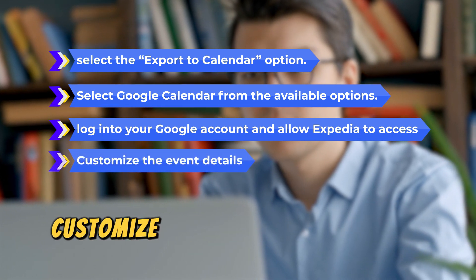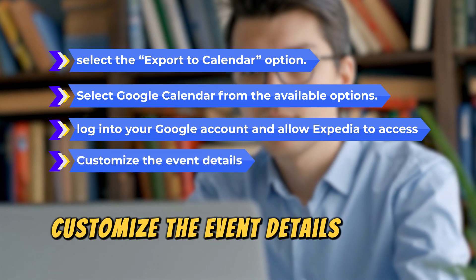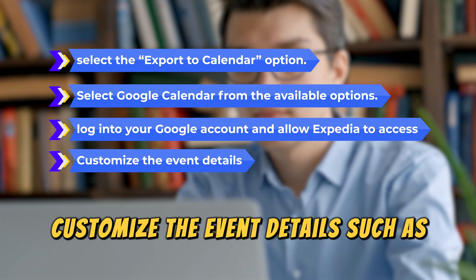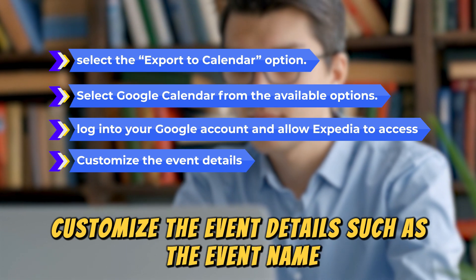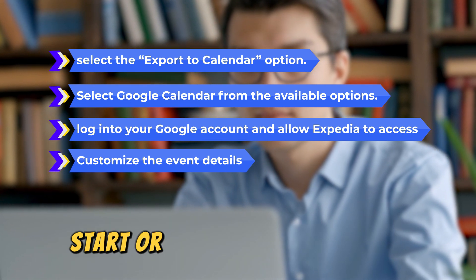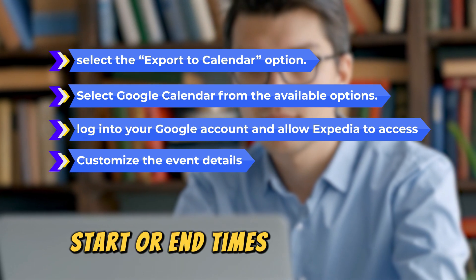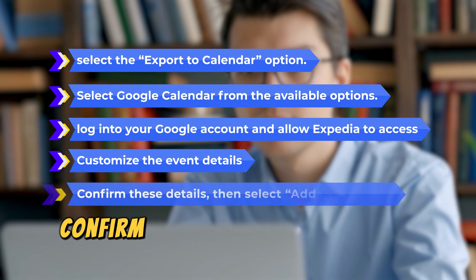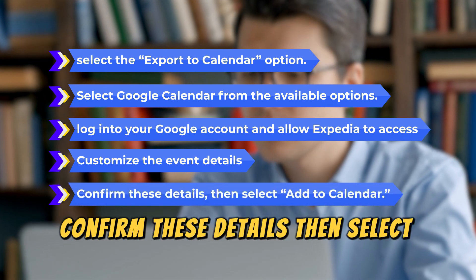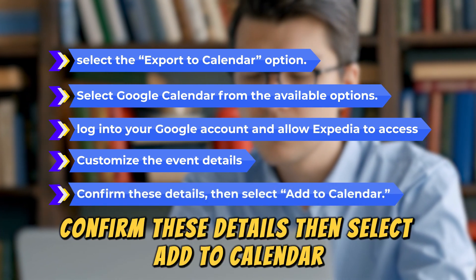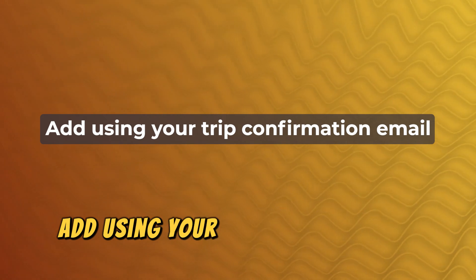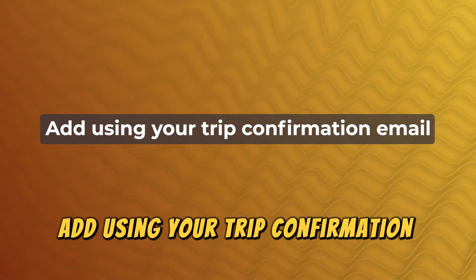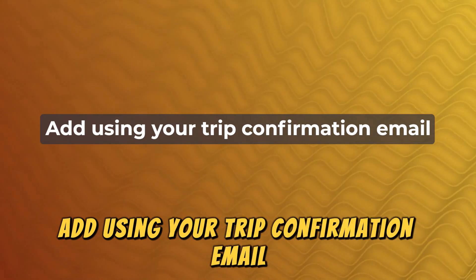Customize the event details, such as the event name, start or end times, and location. Confirm these details, then select Add to Calendar.